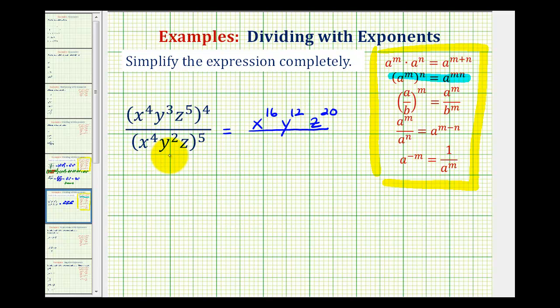In the denominator, since we have a power of five, we're going to multiply every exponent inside the parenthesis by five. Before we do that, we need to recognize that this would be z to the first.